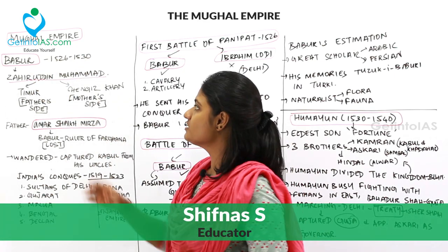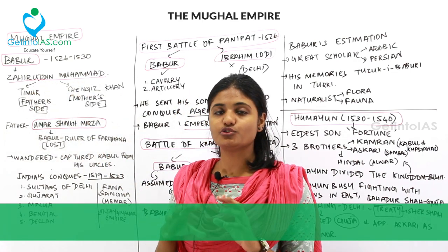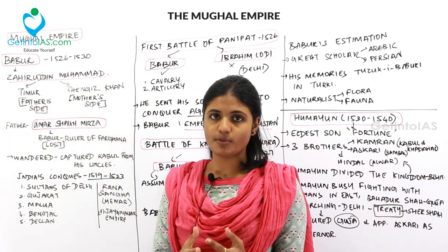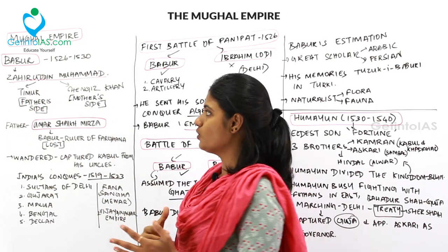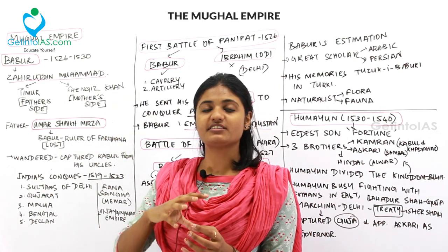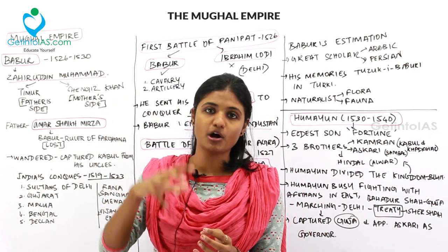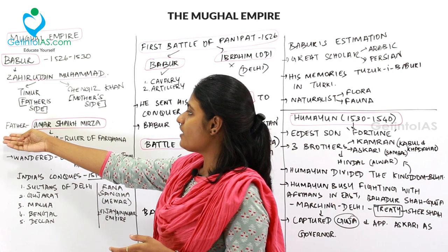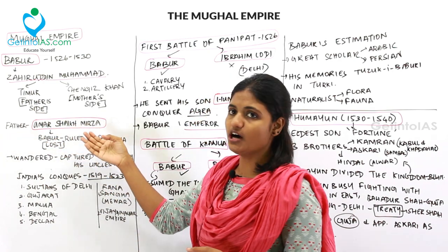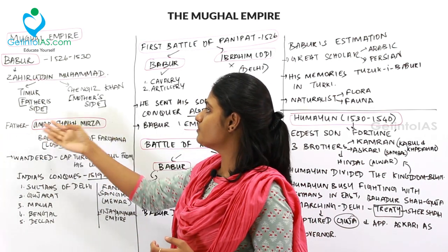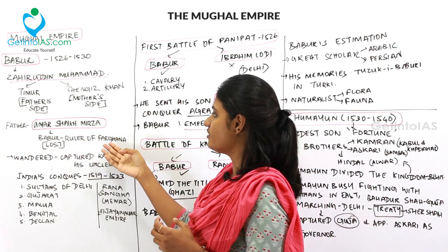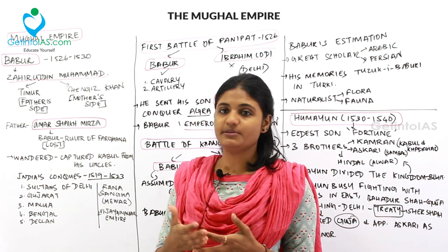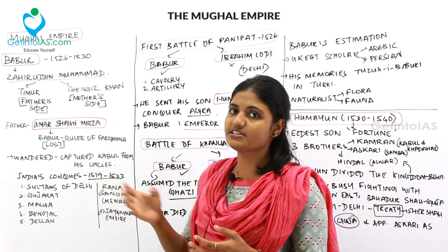Babur's original name was Zahiruddin Muhammad and he belonged to two great families — Taimur from his father's side and Genghis Khan on his mother's side. They were Mongols residing in Central Asia. His father was Umar Sheikh Mirza, the ruler of Farghana. After Umar Sheikh Mirza's death, Babur succeeded as ruler of Farghana, but later lost it and started wandering, finally capturing Kabul from his uncle.